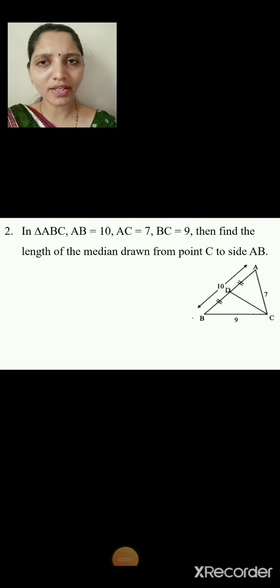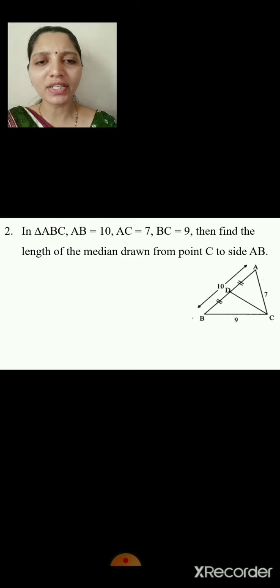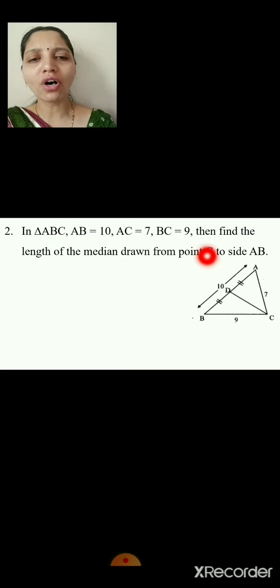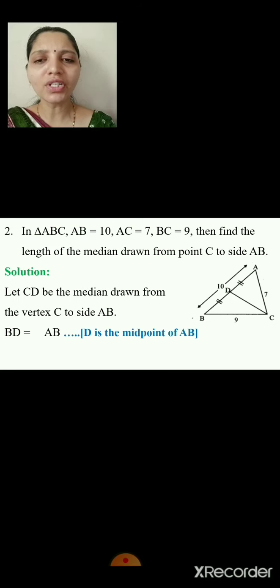Problem 2: In triangle ABC, AB = 10, AC = 7, BC = 9. Find the length of the median drawn from point C to side AB. Let CD be the median drawn from vertex C to side AB.